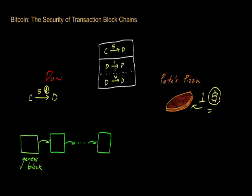Whatever is remaining is either change, or part of it can be used as a transaction fee. But for this example, to keep things simple, I'll assume that the transaction fee is just zero, and we'll focus only on the situation in which everything is being accounted for in the transaction.